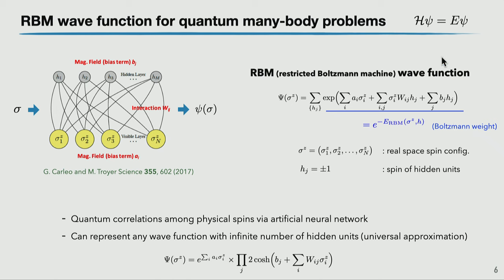Again, what we want to solve is the quantum many-body problem. The question is how to approximate the quantum state. For simplicity, let us consider the spin-1/2 quantum spin system. In the neural network approach, we connect the input — the spin configurations — to the output, which is the wave function, with a neural network in the intermediate step. Here is an example of the restricted Boltzmann machine. The RBM consists of sigma spins corresponding to the physical degrees of freedom, and hidden H spins as auxiliary degrees of freedom. Both sigma and H spins are Ising spins.